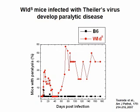We infected B6 and WLD^S mice with Theiler's virus. This is the percentage of mice that developed paralysis. B6 mice, shown in black, are known to be resistant to Theiler's virus infection, and most mice did not develop disease during the 6-month observation period. In contrast, 30% of WLD^S mice, shown in red, developed paralysis during the acute stage, and 50% of WLD^S mice showed paralysis during the chronic stage of Theiler's virus infection.